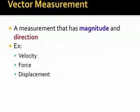Vector measurements have a magnitude and a direction. One example of this is velocity. Velocity is just speed with a direction added. So instead of 35 miles per hour, we're going to go 35 miles per hour north.